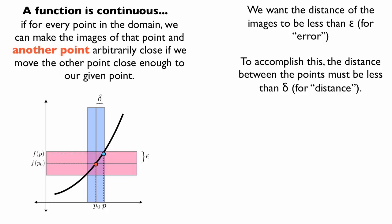The terminology is this: we want the distance of the images to be less than epsilon. Epsilon stands for error — it used to be called error — because once you map it, these two points are going to be a little bit off of each other. To accomplish this, the distance between the points p and p0 must be less than delta. We can view this visually by moving the point along the curve. As long as the point is within delta of p0, we know that f of p is going to be within epsilon of f of p0. A function is continuous if for every point in the function and for every epsilon, we can find even smaller epsilons.